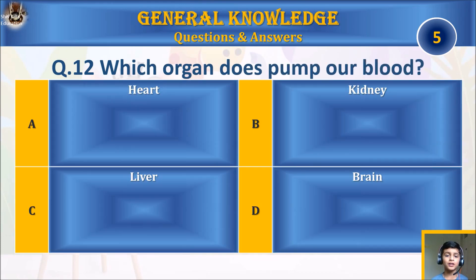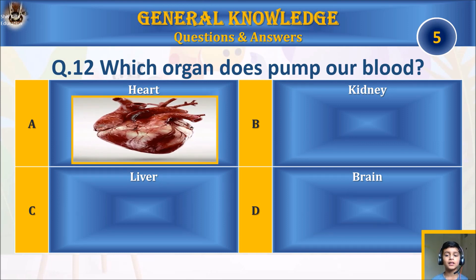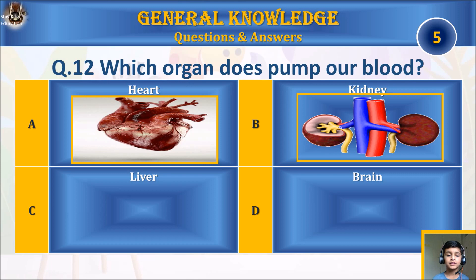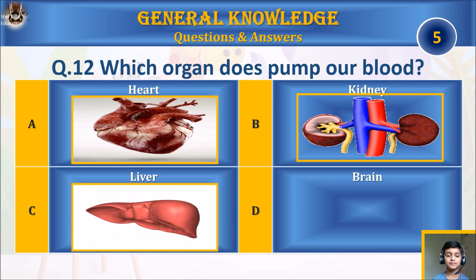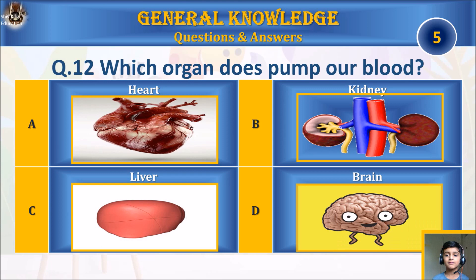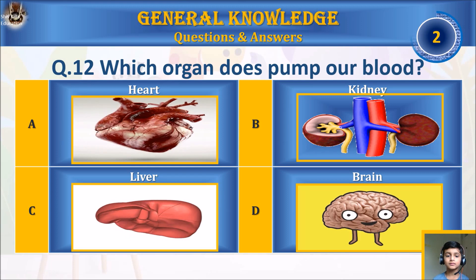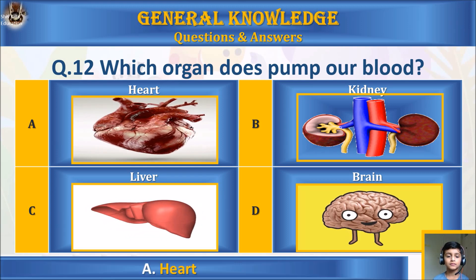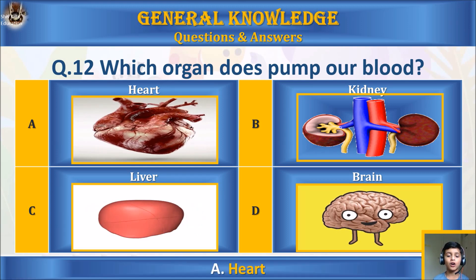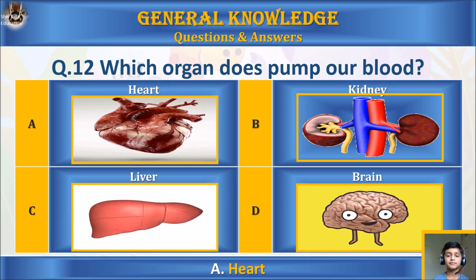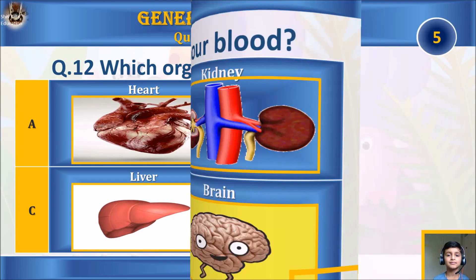Question twelve: which organ pumps our blood? A) heart, B) kidney, C) liver, or D) brain? Your time starts. The answer is A) heart.